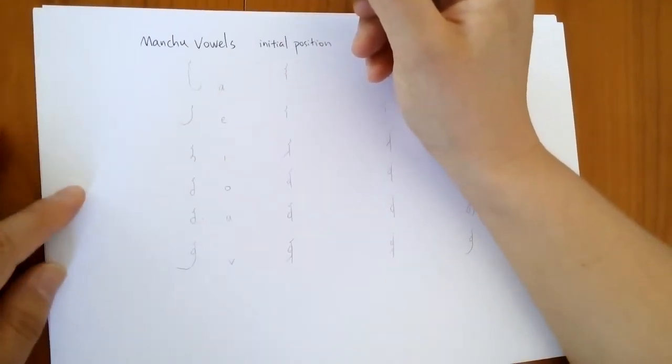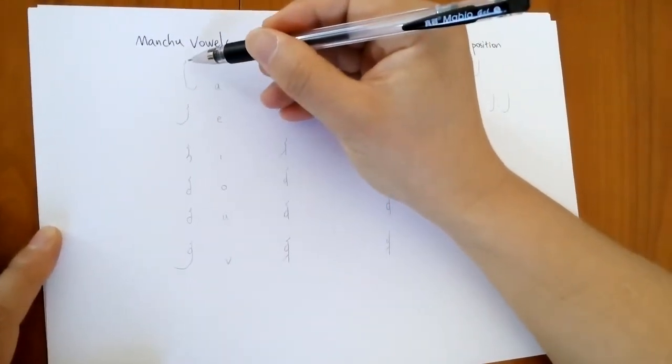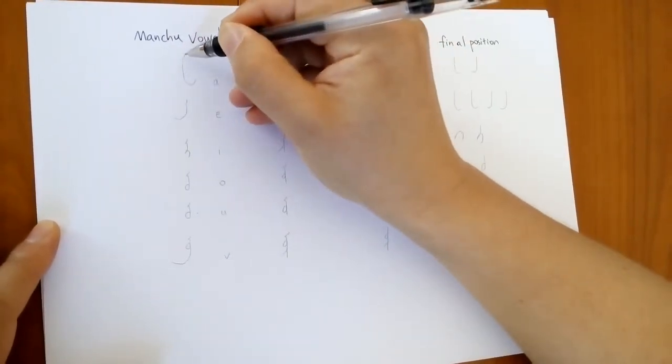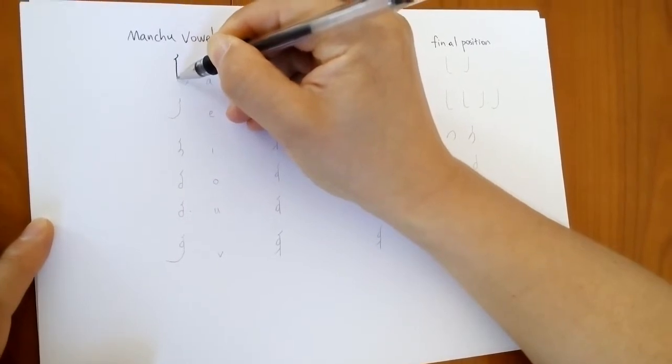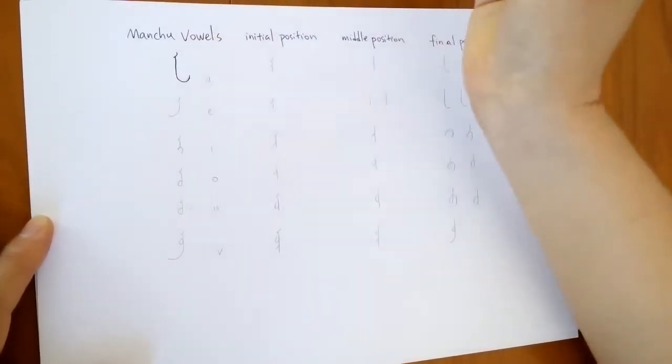Today we look at the Manchu vowels. The first one is A. It writes this way. This is the Manchu letter A.